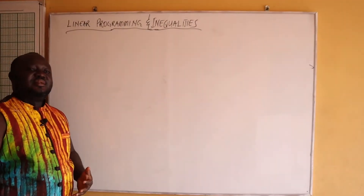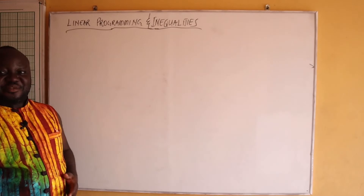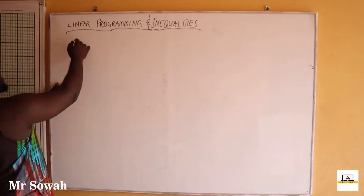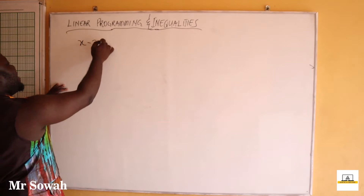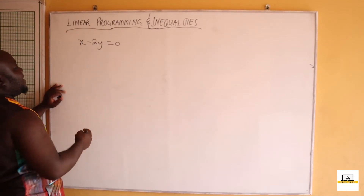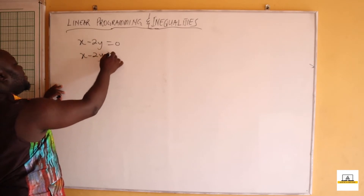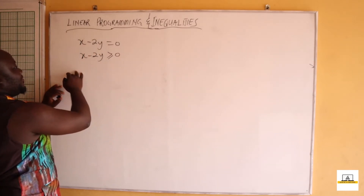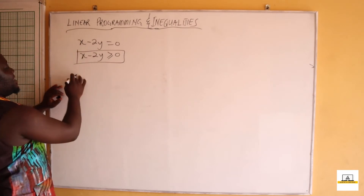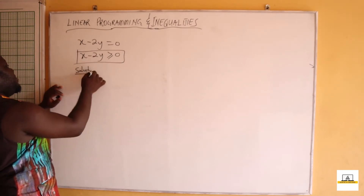In our third scenario, we are given x minus 2y is equal to zero, and we are asked to indicate where x minus 2y is greater than or equal to zero. In this case, we are going to find our x and y intercepts.